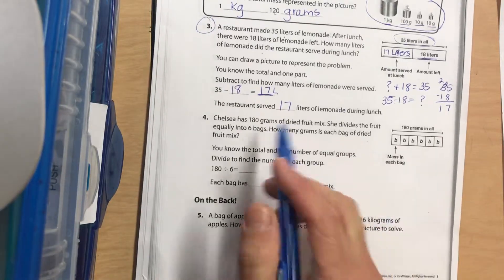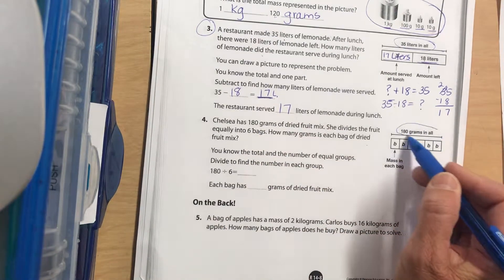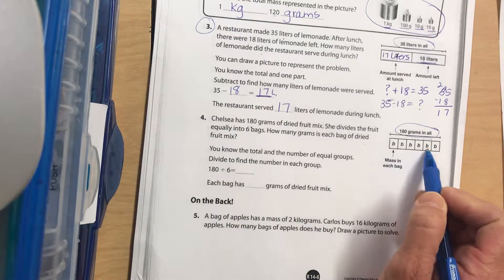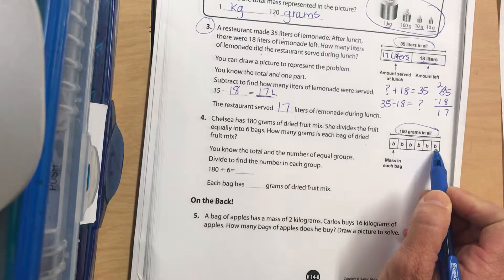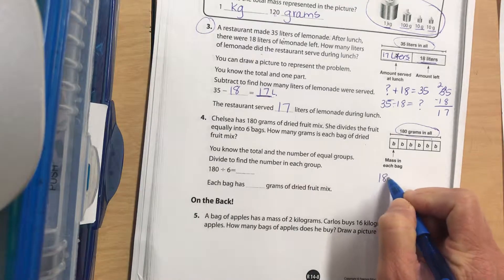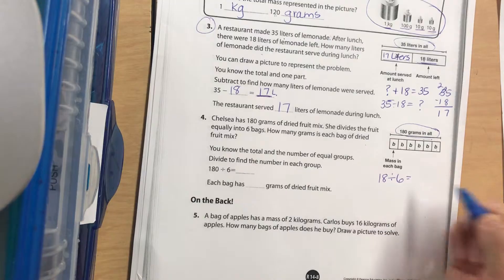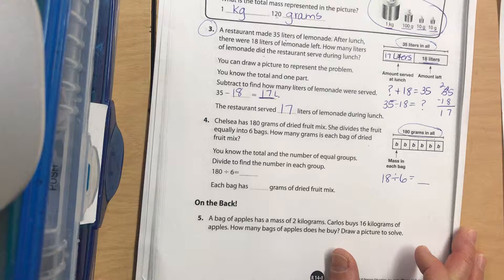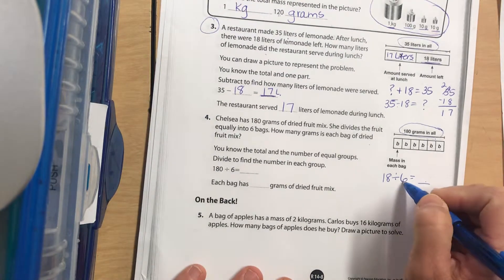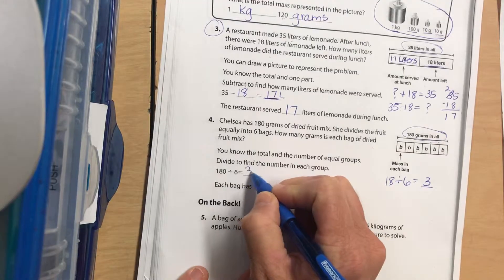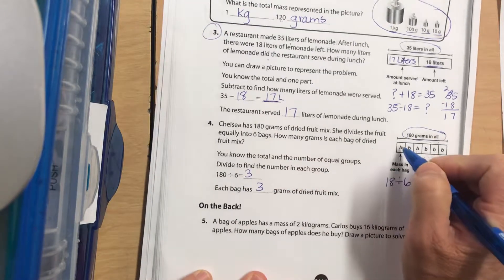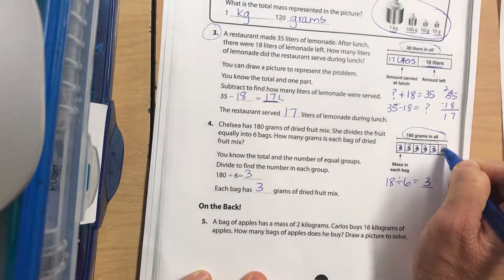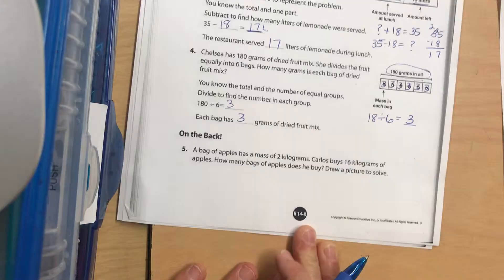Okay, number four. Chelsea has 180 grams of dried mixed fruit, so that's our total on top of our diagram. She divides the fruit into six equal bags. How many grams are in each bag? So we have 18 total divided into six equal bags. Pause it. What number times six equals 18? Should be three. So each bag has three grams. Think about it: three, six, nine, twelve, fifteen, eighteen. That would make sense. It always has to make sense at the end.